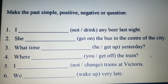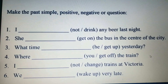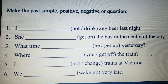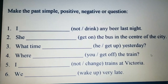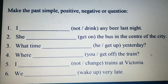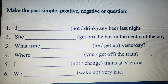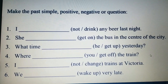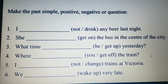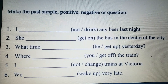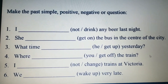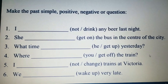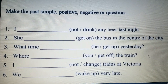Fifth sentence: 'I ___ (not) change trains at Victoria.' Our verb is 'change,' and by making use of 'did not' we frame the negative statement: 'I did not change trains at Victoria.' Then: 'We ___ up very late.' Our verb is 'wake,' which is the first form; the past form of 'wake' is 'woke,' so: 'We woke up very late.' This is how we make simple positive, negative, or question statements using simple past tense.